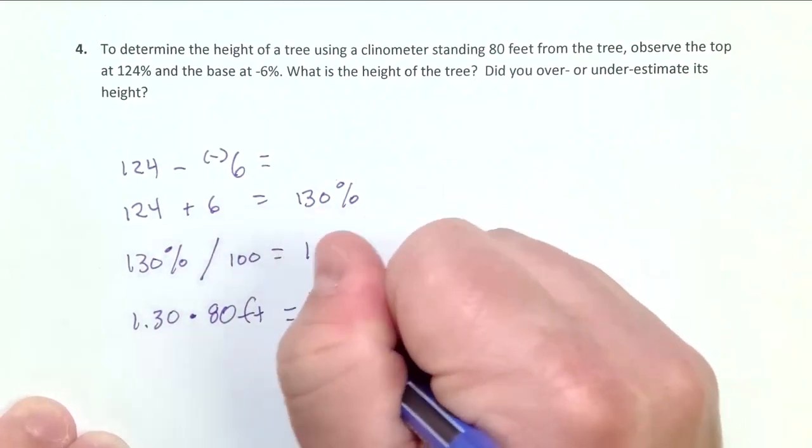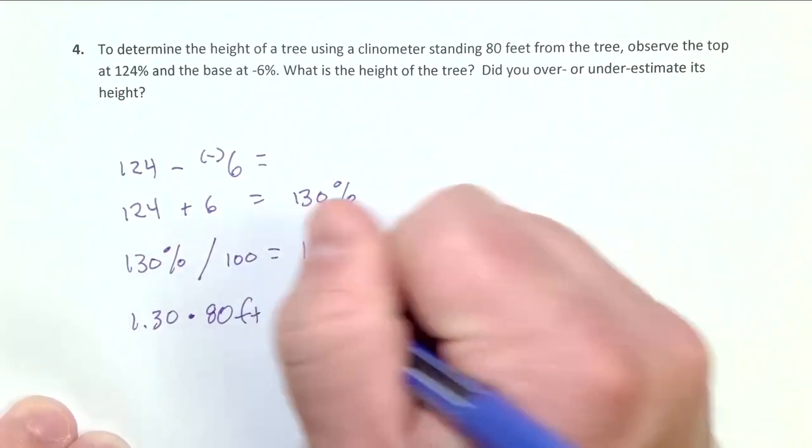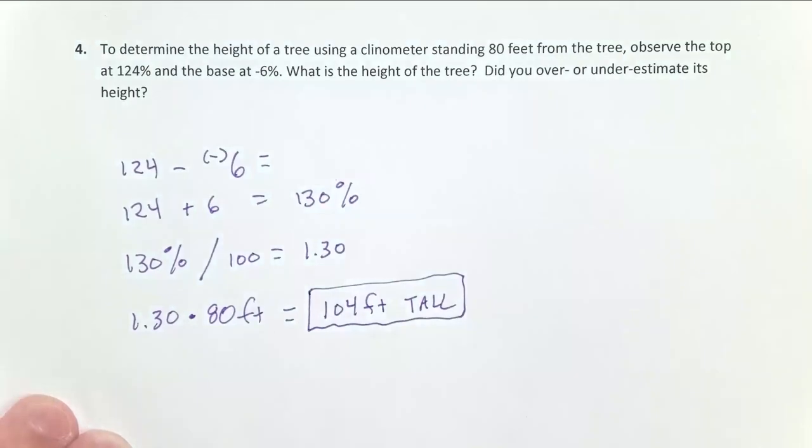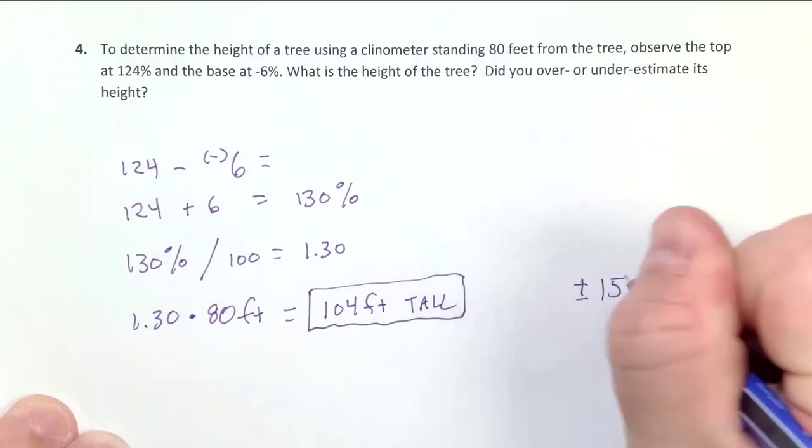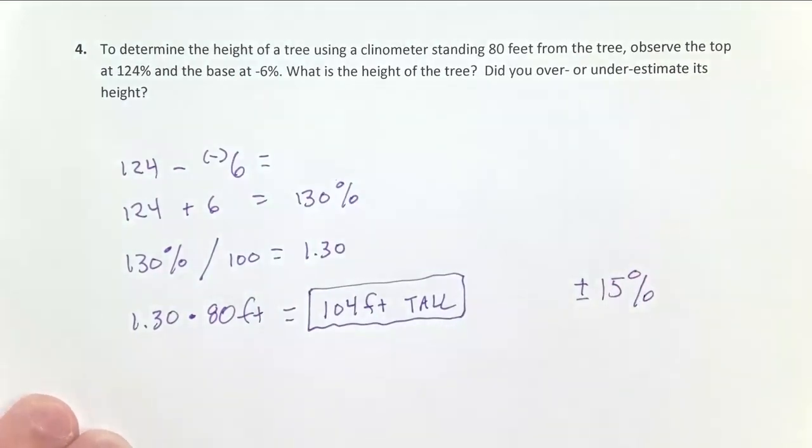And here's our answer. Now we walked 80 feet away from that. That's not exactly within our plus or minus 15 percent that we would like. That may not be the most accurate estimate we made of the height of this tree.